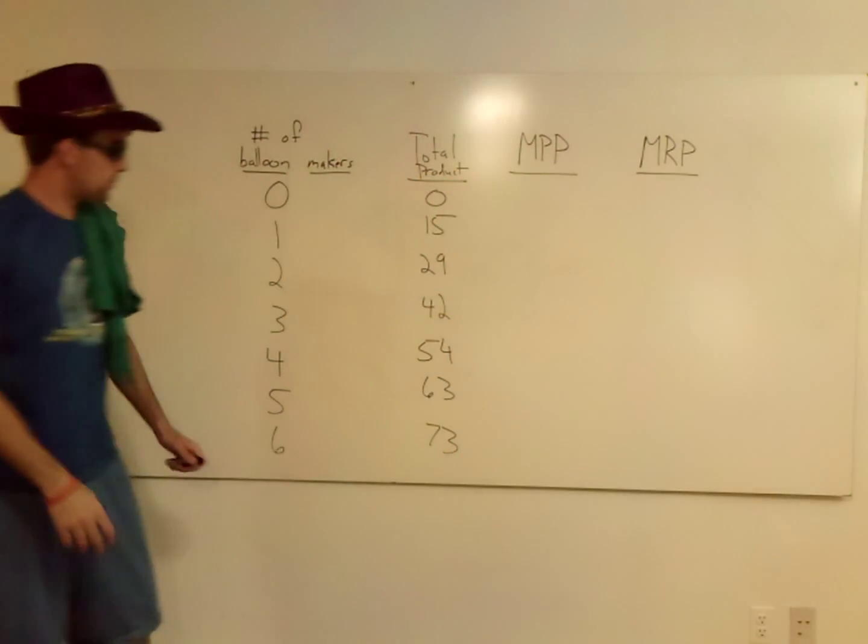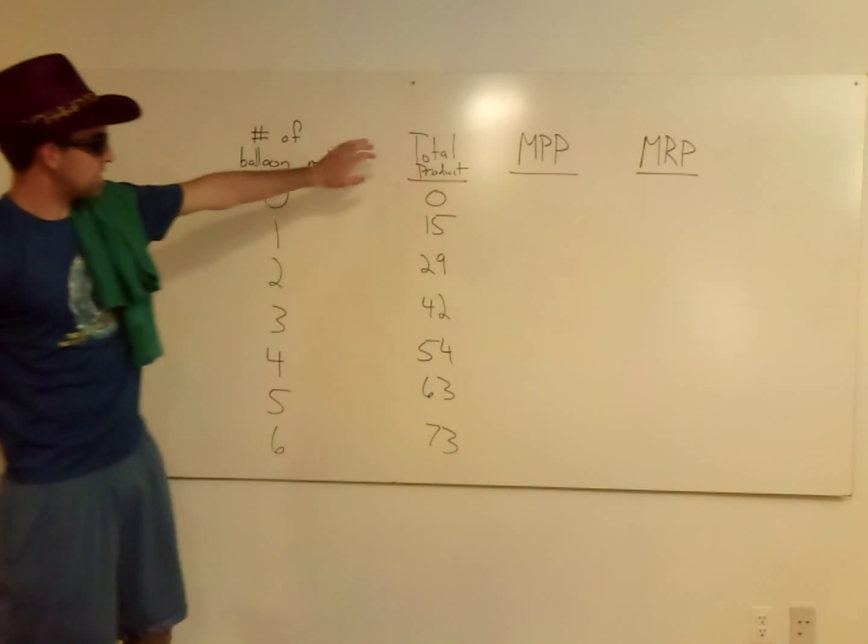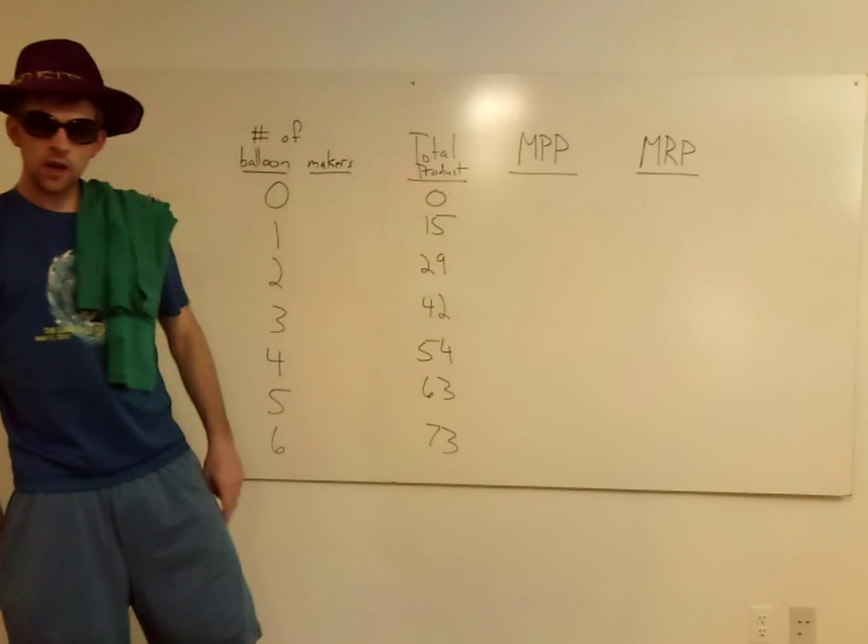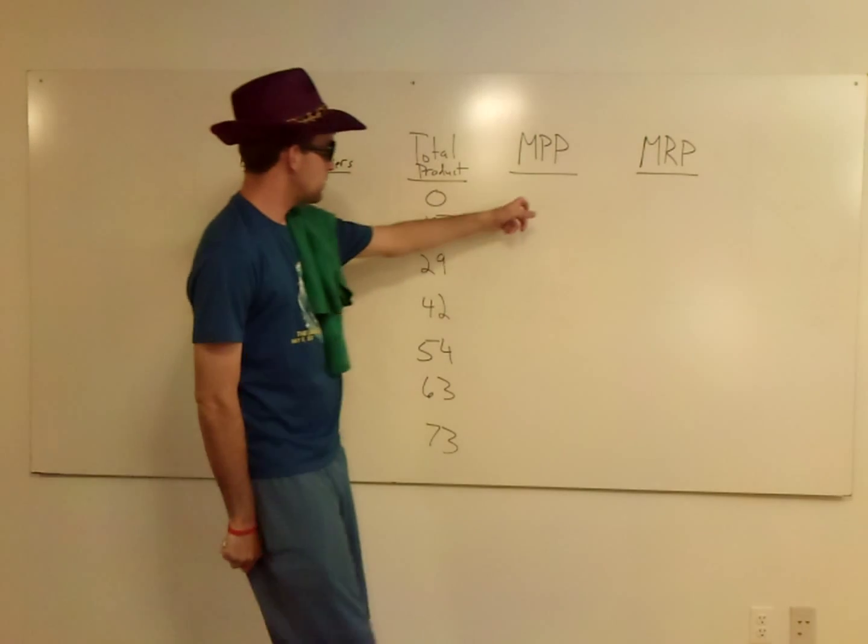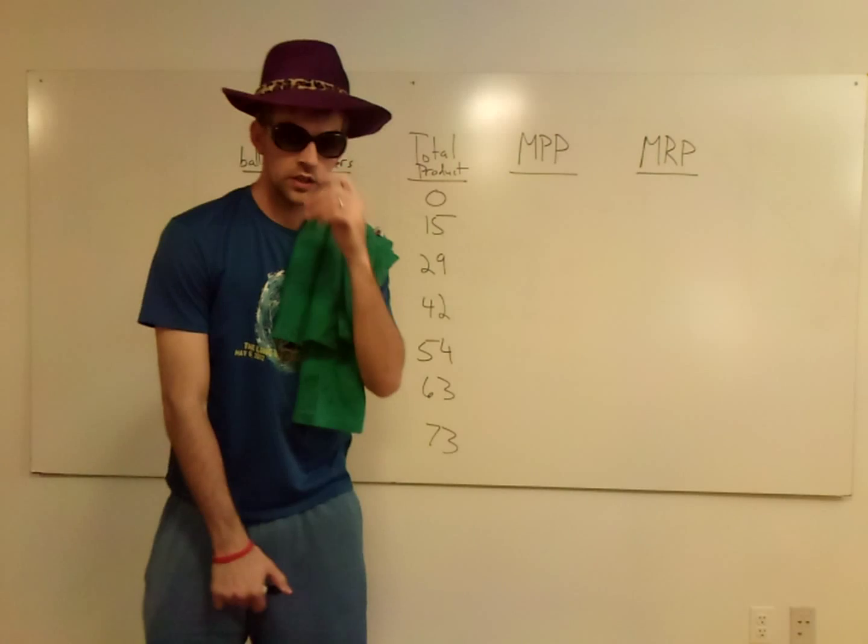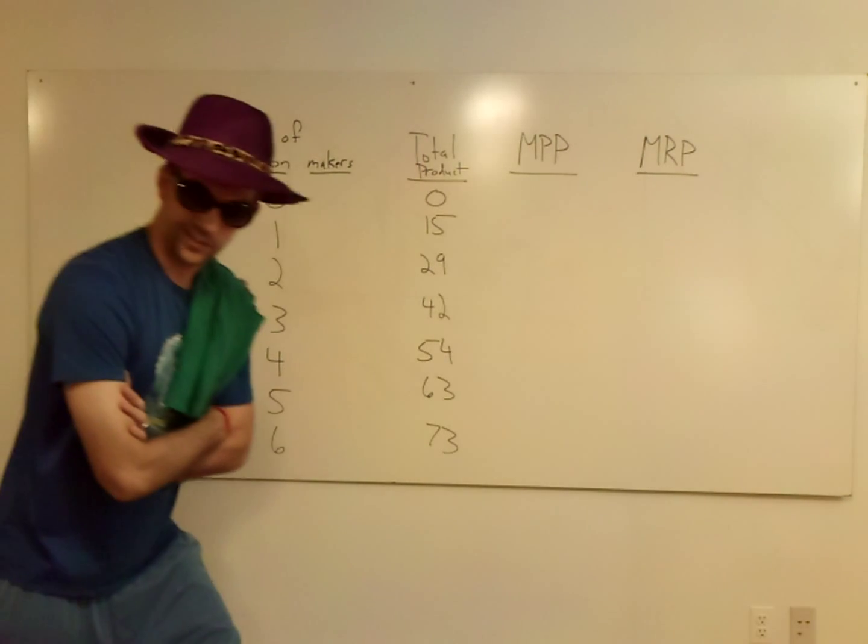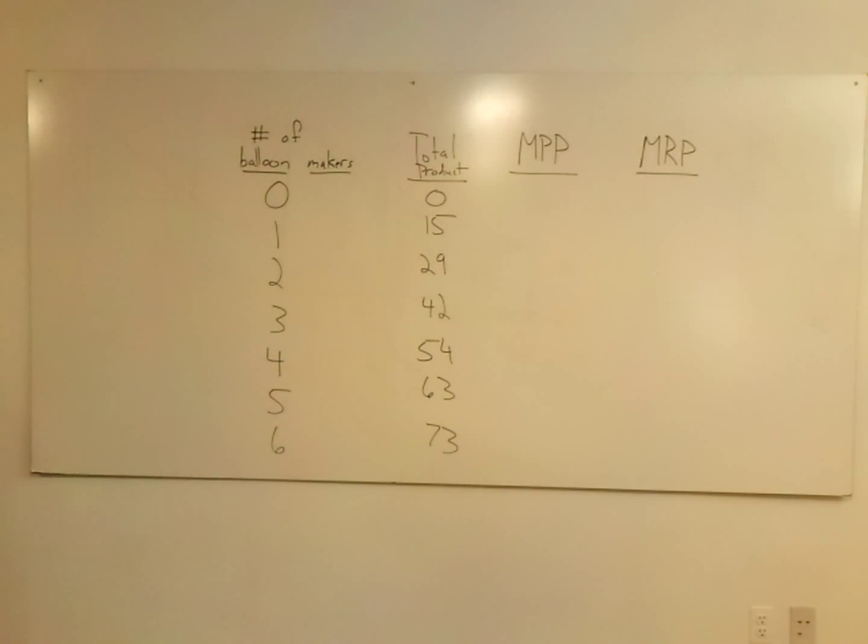So I'm going to step aside here. I've got the number of balloon makers from zero to six. I've got their total product. Now what I'm going to do in a second is fill in these two columns here, the marginal physical product and the marginal revenue product. If you think you're really smart and you know how to do this, I'm going to step out of the way. I'll give you a chance to give it a shot, and then I'll step in and show you how it's really done. Give it a shot here.